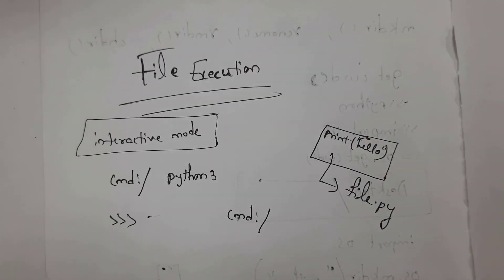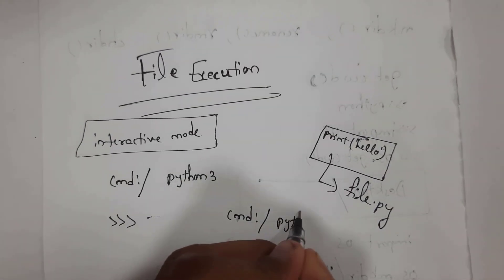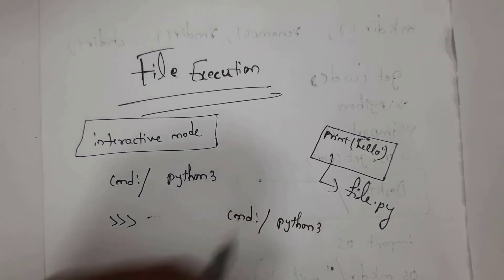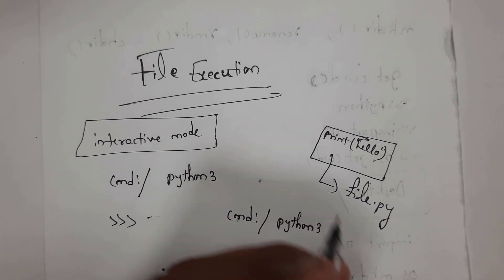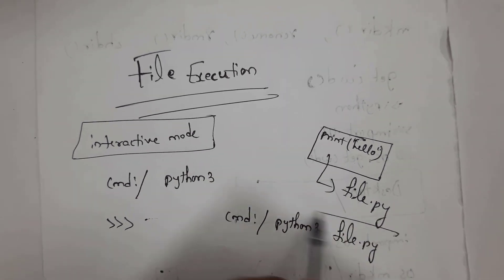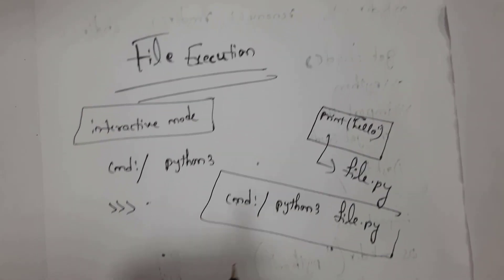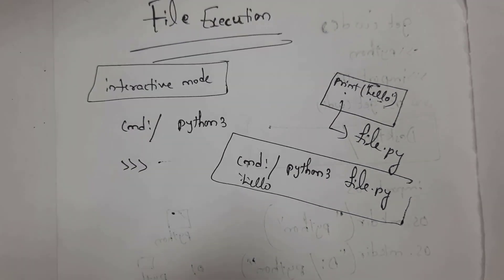Now open the command prompt in the same location and type Python 3, that is the third version. Write Python 3 space filename, where the filename is file.py. When you run this line of code in the command prompt, you will get the output hello. We call this script mode.